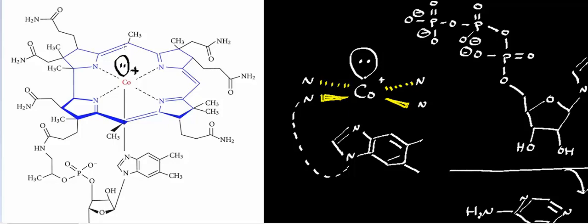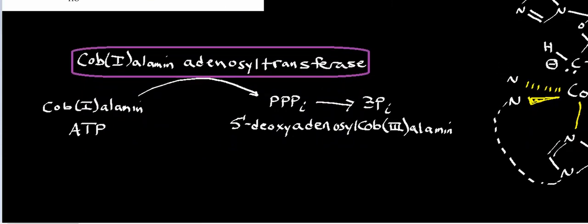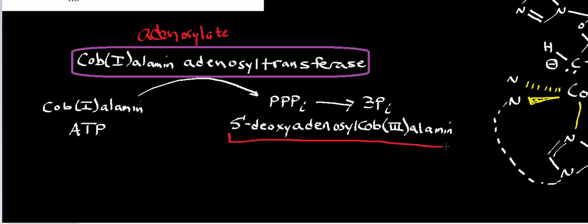This is a preparatory enzyme that's going to do something called adenosylation — it's going to adenosylate cobalamin. This enzyme right here, which is called cobalamin adenosyl transferase, is going to adenosylate cobalamin, or adenosylate vitamin B12. What we get out of it is this molecule right here, which is called 5'-deoxyadenosyl cobalamin. This is the form of B12 used in the enzyme methylmalonyl-CoA mutase.